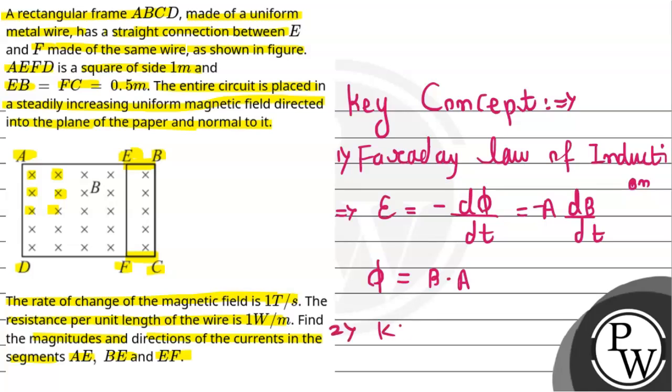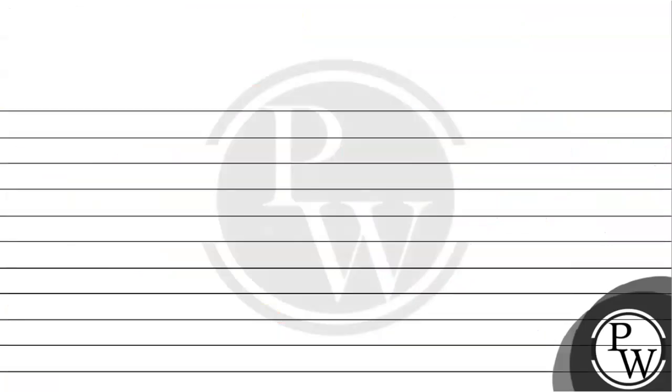Second concept we're going to use is Kirchhoff's voltage law. In a closed loop, summation of voltage is equal to zero. Voltage equals current multiplied by resistance. First of all, let's find out the magnitudes.